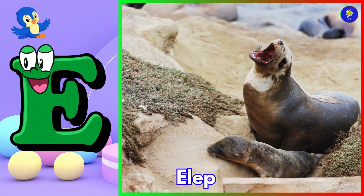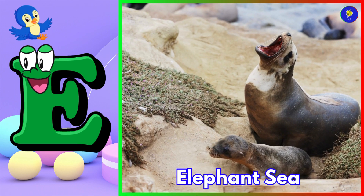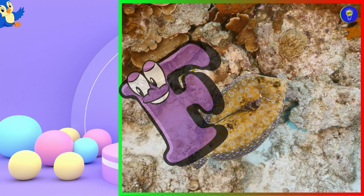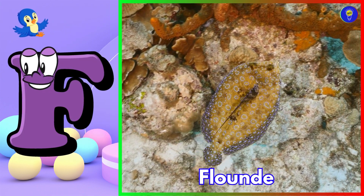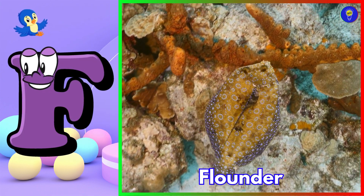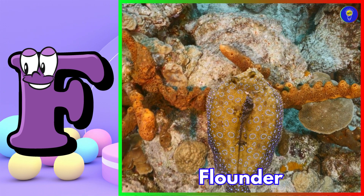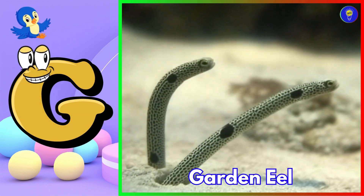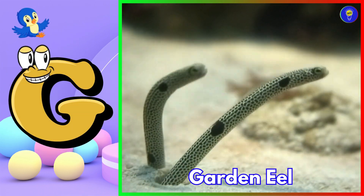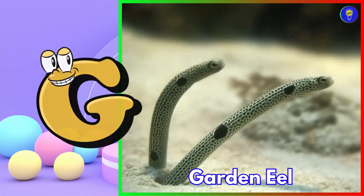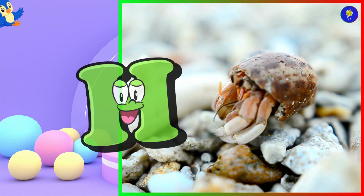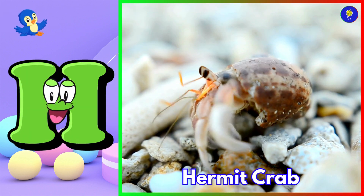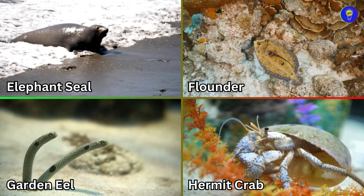E is for elephant seal. F is for flounder. G is for garden eel. H is for hermit crab.